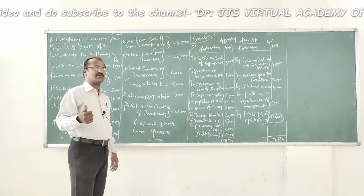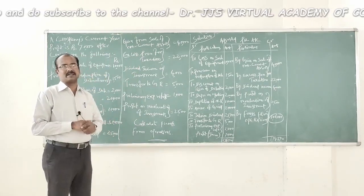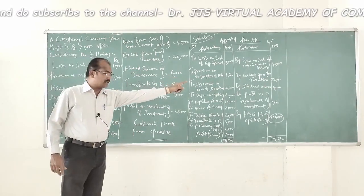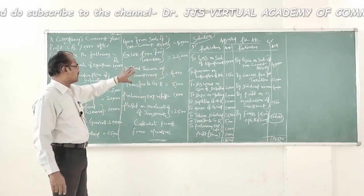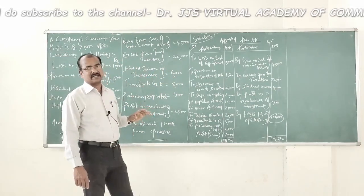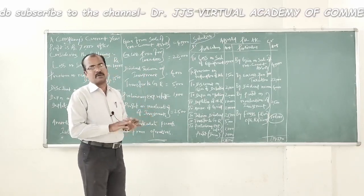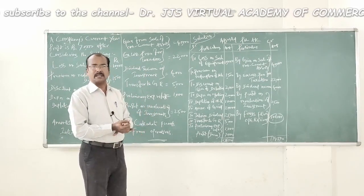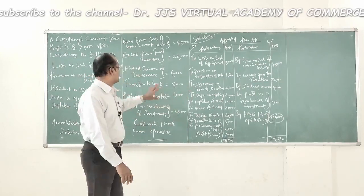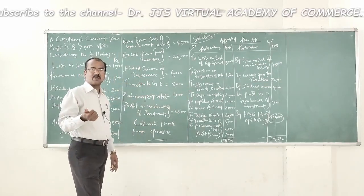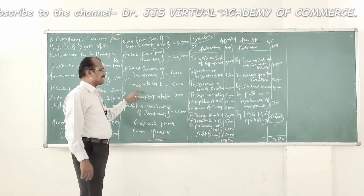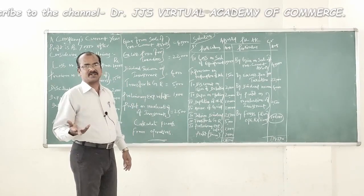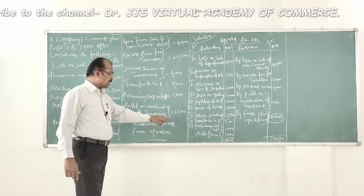Gain from sale of non-current assets is a gain that would have brought funds into the organization, but it is a non-operating income and has to be reversed — so it is credited. That is the first item credited in the adjusted P&L account. Excess provision for taxation will be written back to the main pool of profit; it is treated as income and is a non-operating income, so it is credited. Dividend income on investment is also a non-operating income and is credited.